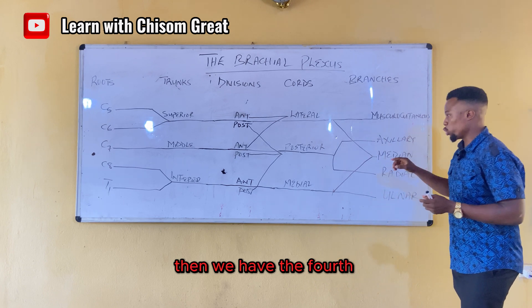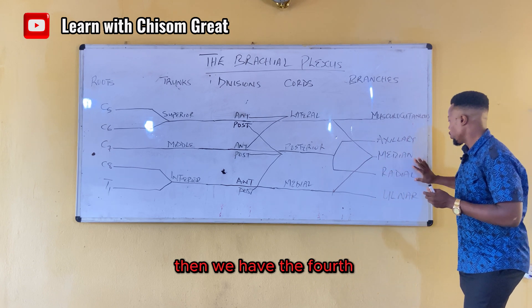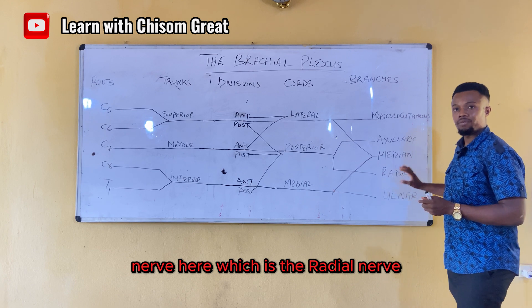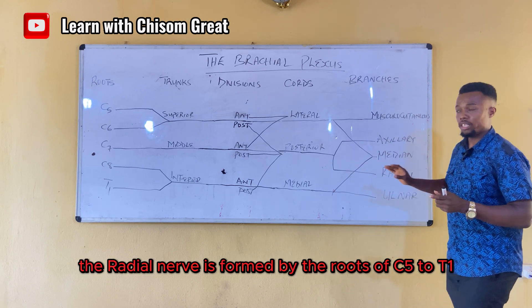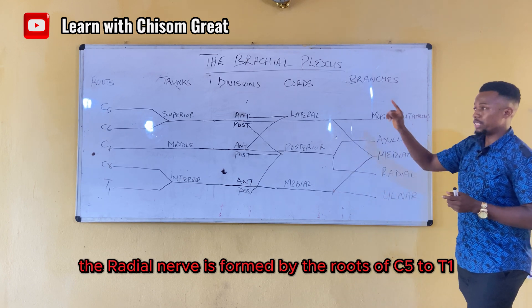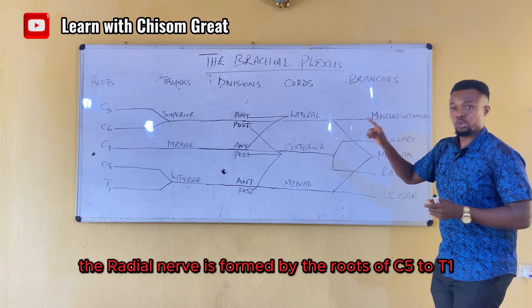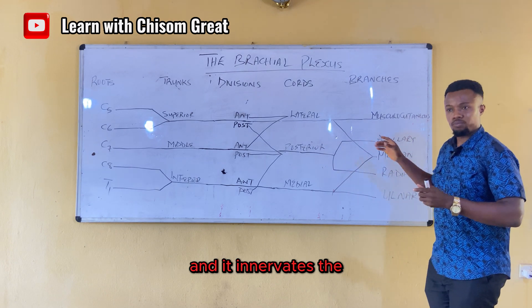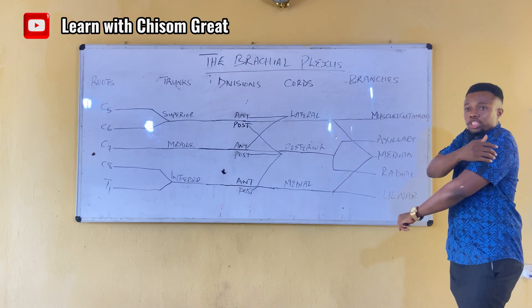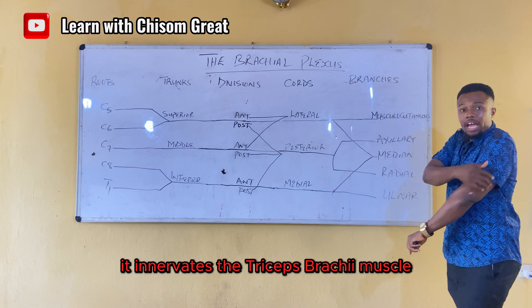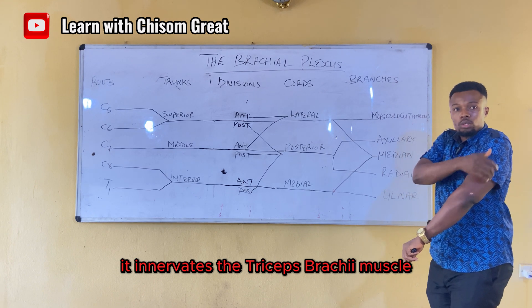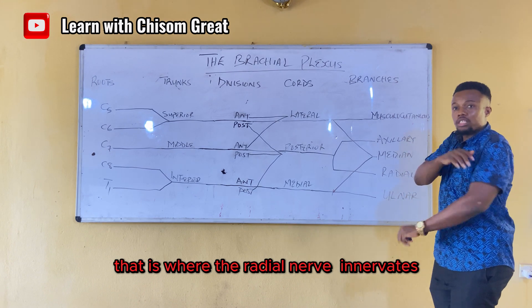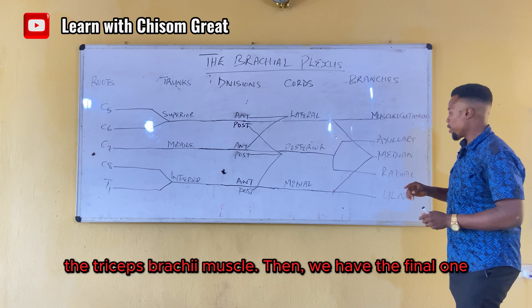The fourth nerve is the radial nerve. The radial nerve is formed by the roots of C5 to T1. It innervates the triceps brachii muscle.